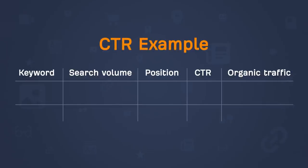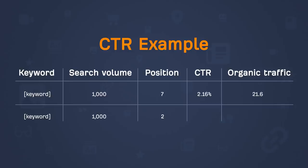To put this into perspective, if the keyword your page ranked for had a search volume of 1,000, then being in position 7 would get you around 21 search visits per month, whereas in position 2, you'd get 155 monthly search visits — which is more than 7 times the search traffic.